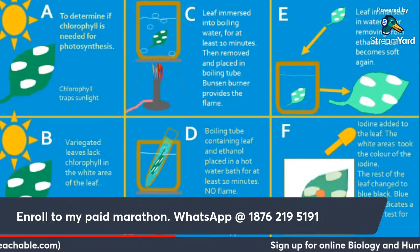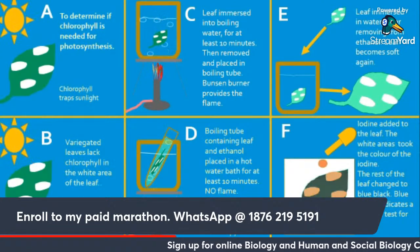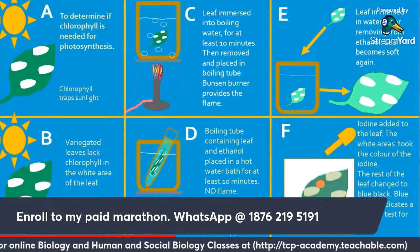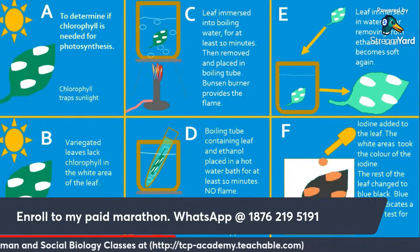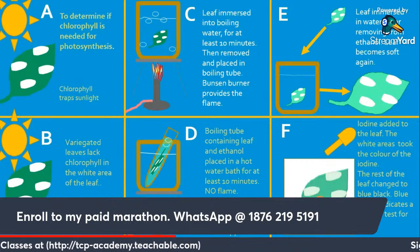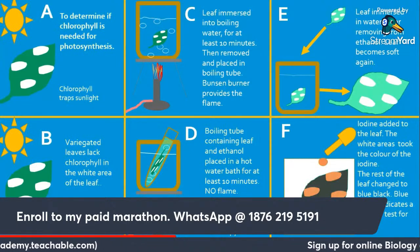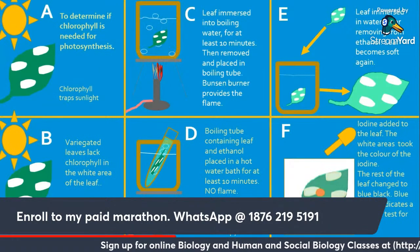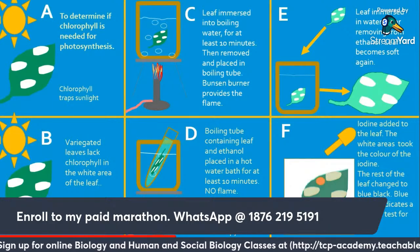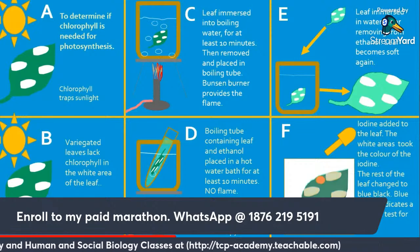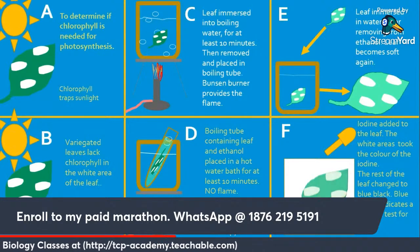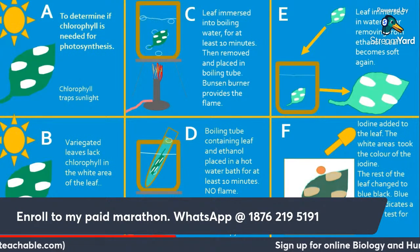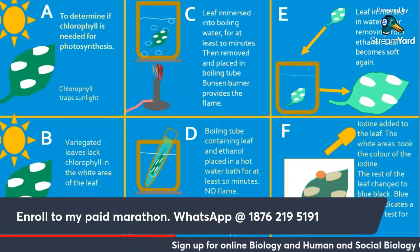Section E: the leaf is placed in water as it was very crispy having been removed from the ethanol, then placed on a white tile. In Section F, iodine was added to the leaf. The white areas took the red-brown color of iodine, indicating no starch was present there. However, the other areas changed color to blue-black — a positive test for starch. Based on our result, it is clear that chlorophyll is needed for photosynthesis.